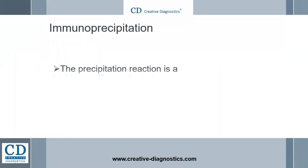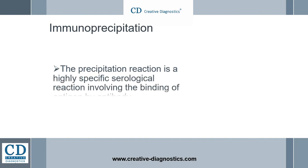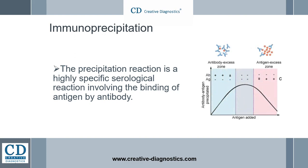The precipitation reaction is a highly specific serological reaction involving the binding of antigen by antibody. The amount of precipitation is affected by the concentration of antibody and antigen. The precipitation reaction is inhibited when either antigen or antibody is present in great excess. The range of optimal concentrations at which the greatest amount of precipitation is generated is called the equivalence zone.